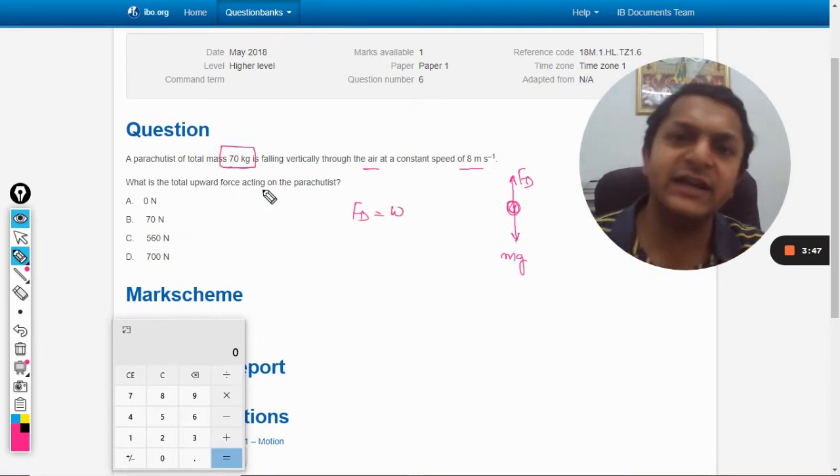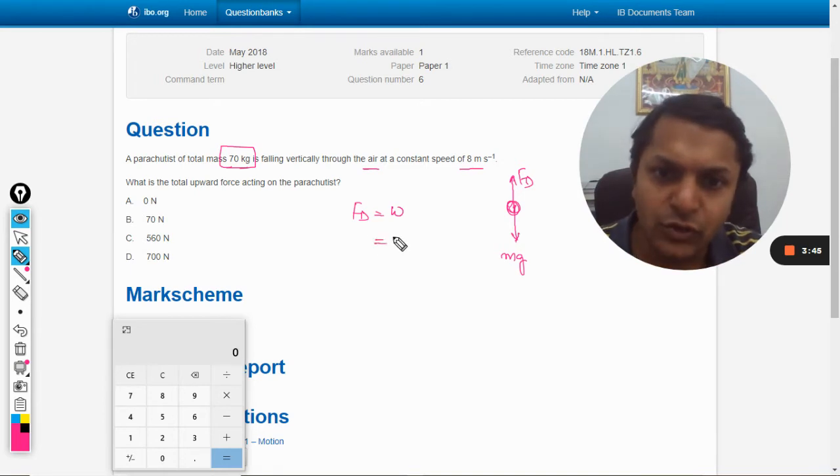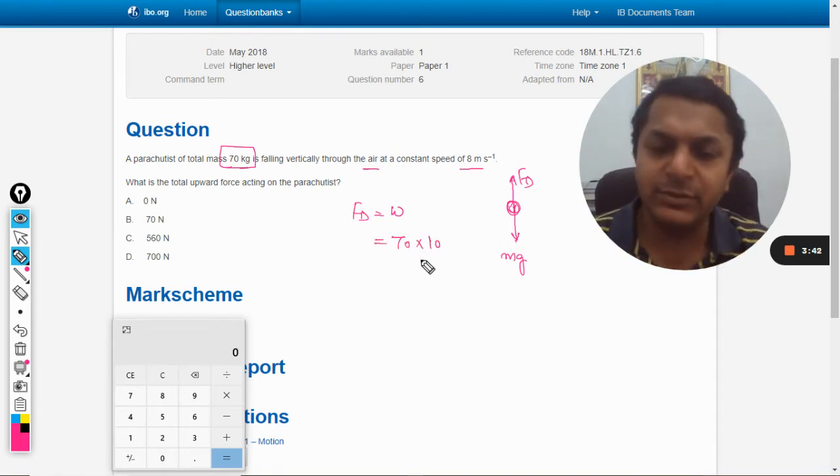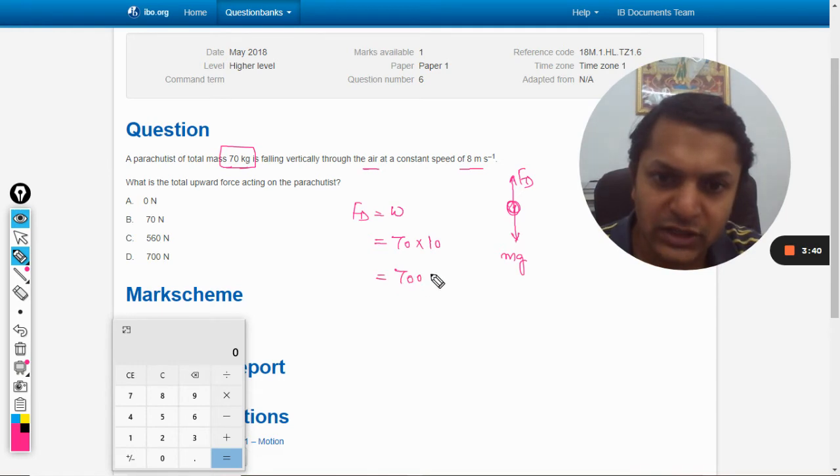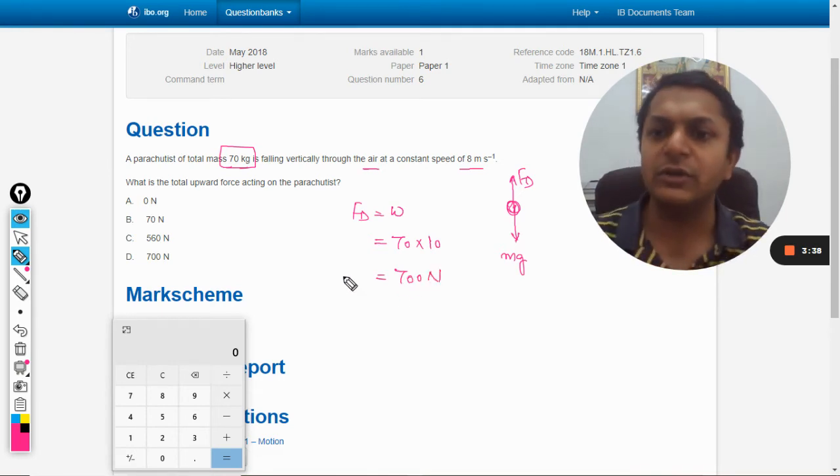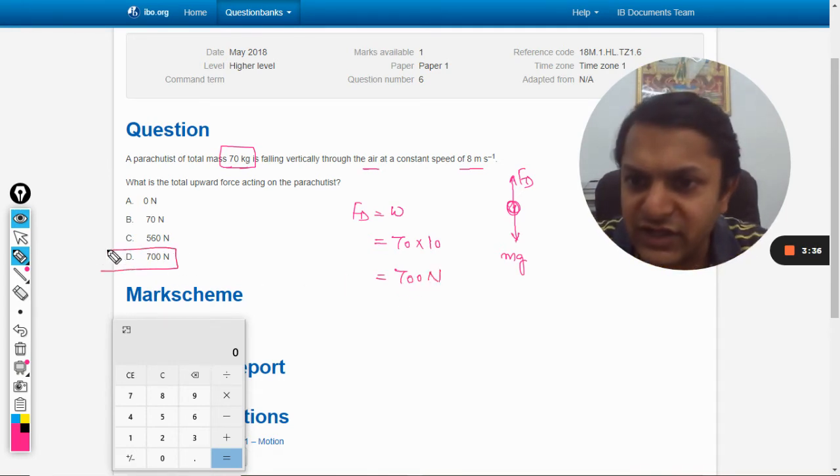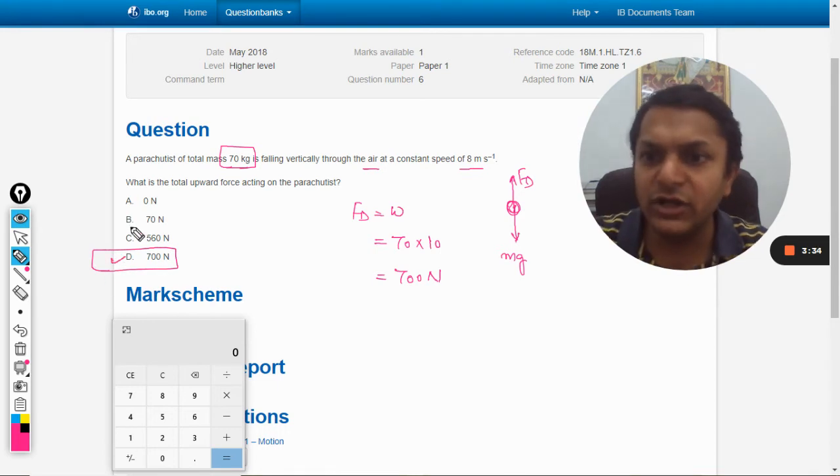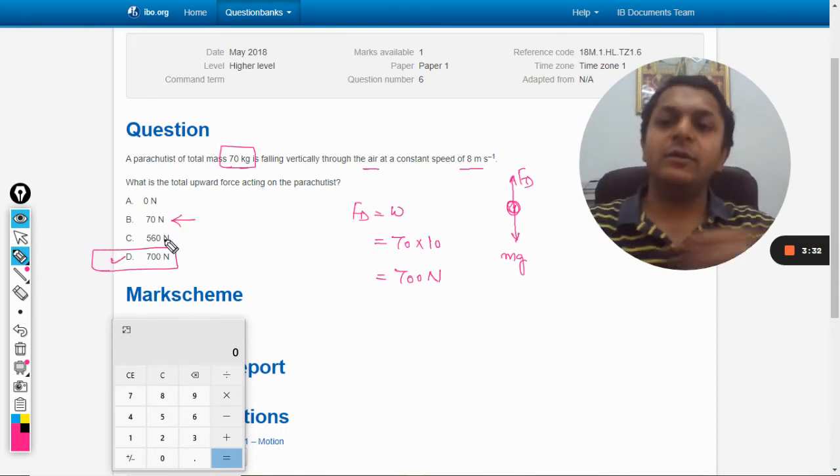And the mass is given as 70 kg, so it has to be multiplied by 10 meters per second squared. So in total, the unit will become 700 Newton. So your answer is D, 700 Newton.